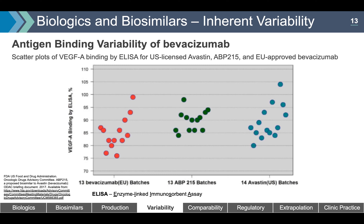Changes in process and natural variability lead to variable quality characteristics. A scatter plot demonstrates the characterization of VEGF binding of EU batches, US batches, and biosimilar bevacizumab (Mvasi). Since VEGF binding is bevacizumab's primary mechanism of action, this activity must be highly conserved. The range of activity for EU batches was approximately 75–100%; for US batches, 80–105%; and for the proposed biosimilar Mvasi, approximately 85–100%. This non-clinical data allowed the FDA to declare Mvasi comparable to Avastin and license it as a biosimilar.